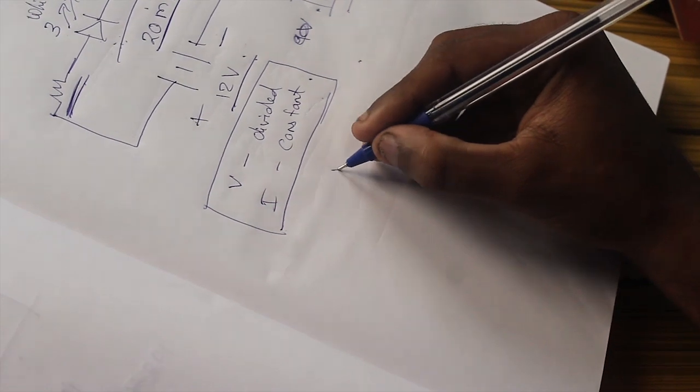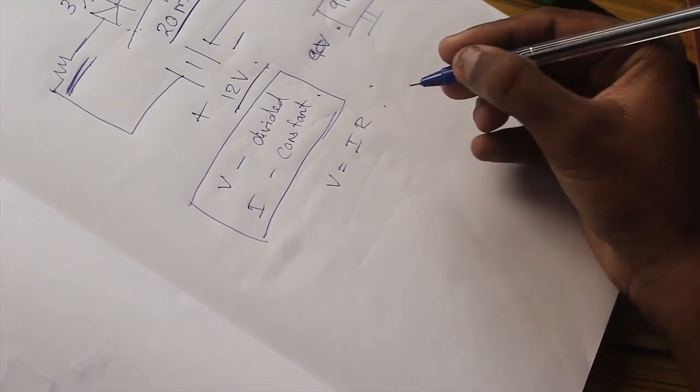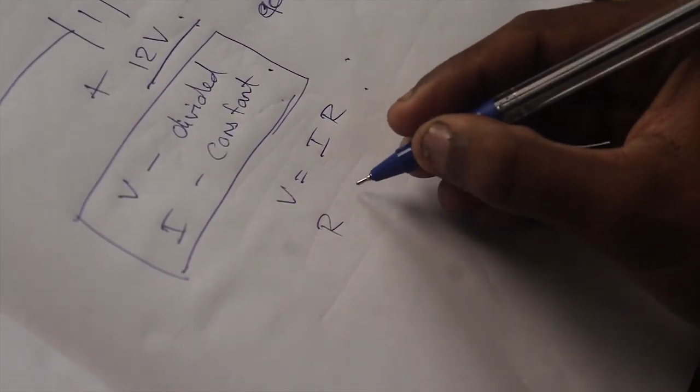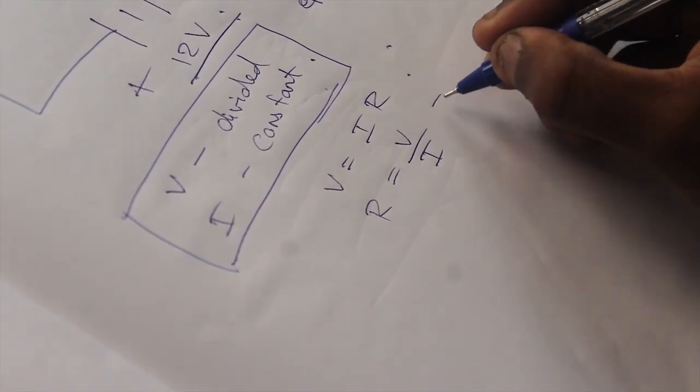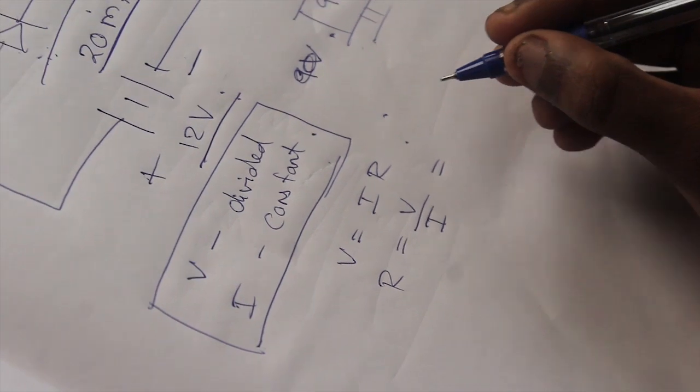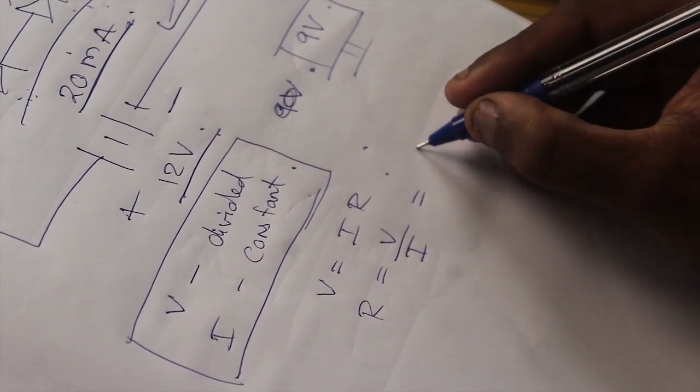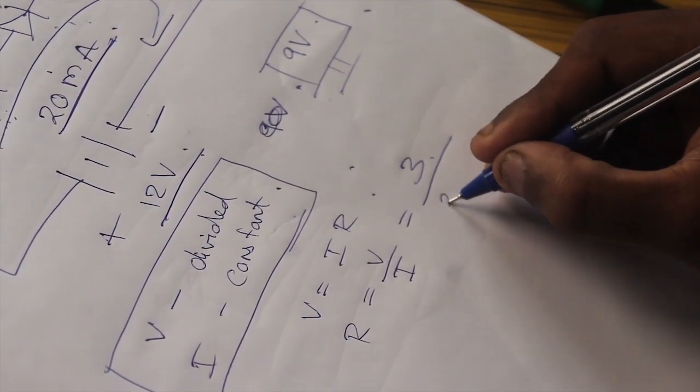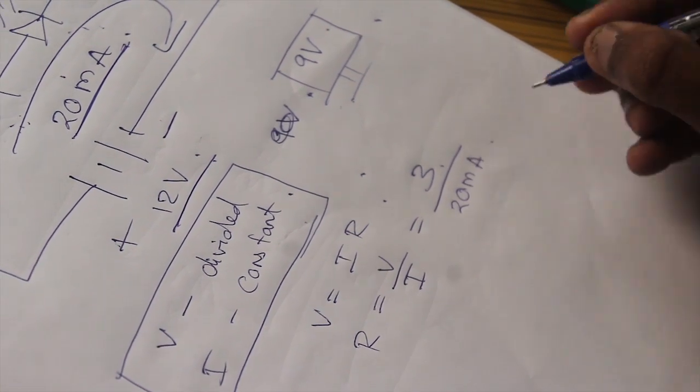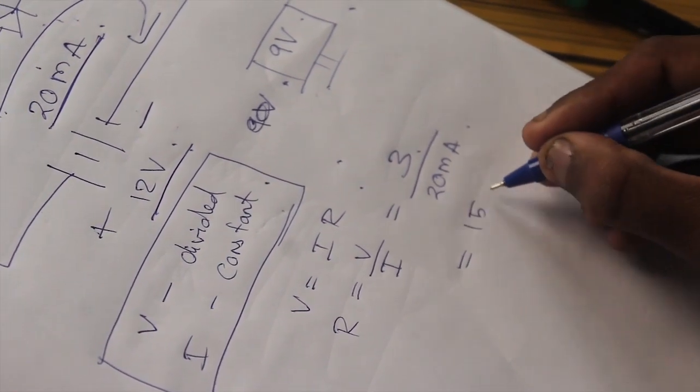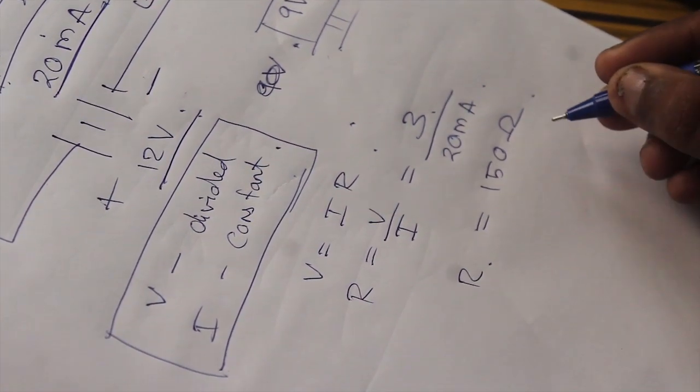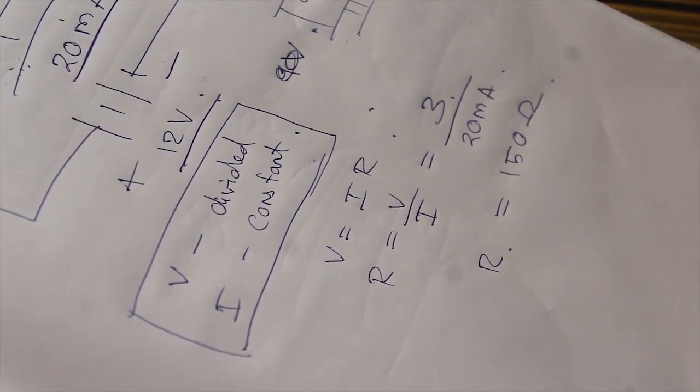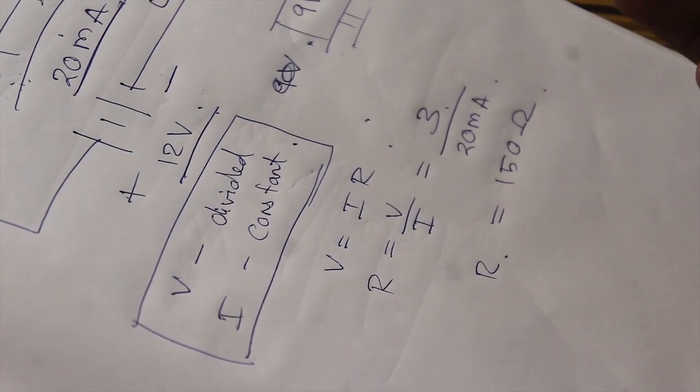Now let us see how to calculate the value of this resistance. According to Ohm's law, V equals IR. From this, we can calculate the resistance by R equals V by I. This V is the voltage drop across the resistor. We need to drop 3V divided by 20 milliamps, which gives approximately 150 Ohm. You can directly connect a 150 Ohm resistor or use series and parallel combinations of resistors.